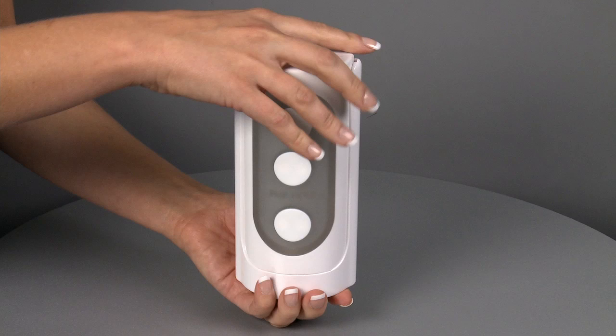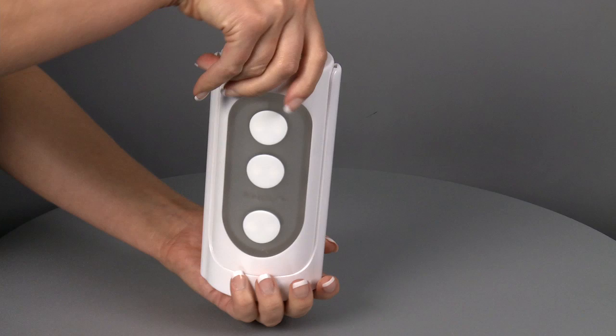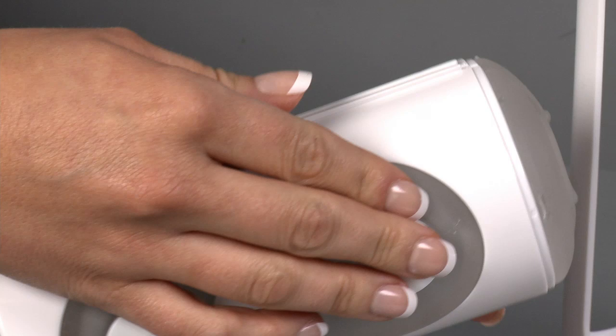Now before we take a closer look inside each one, I want to tell you about the features they all share. Each Tenga flip hole has a hard plastic shell. They each have three buttons on the front that you can press for added pressure and stimulation. If you flip it on its side and remove the case, you'll see that they each have a non-realistic opening.